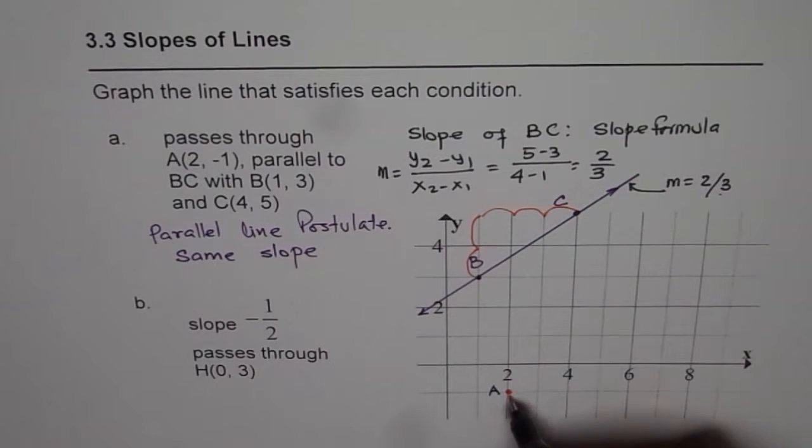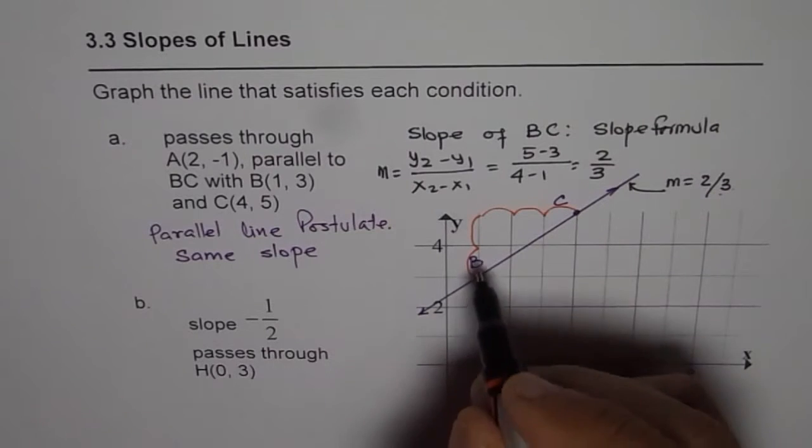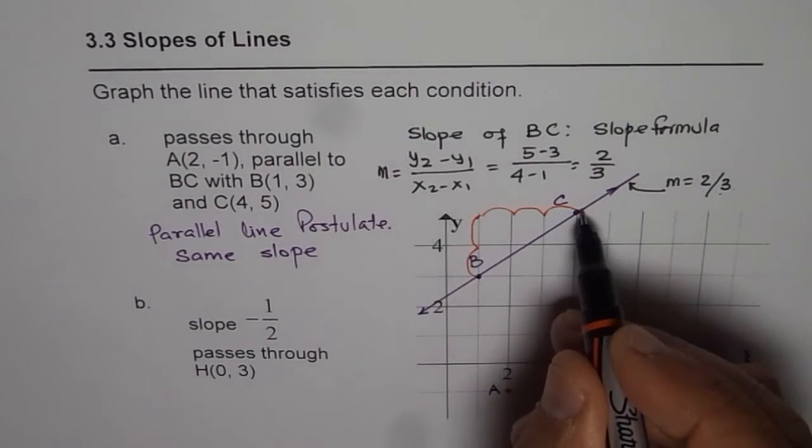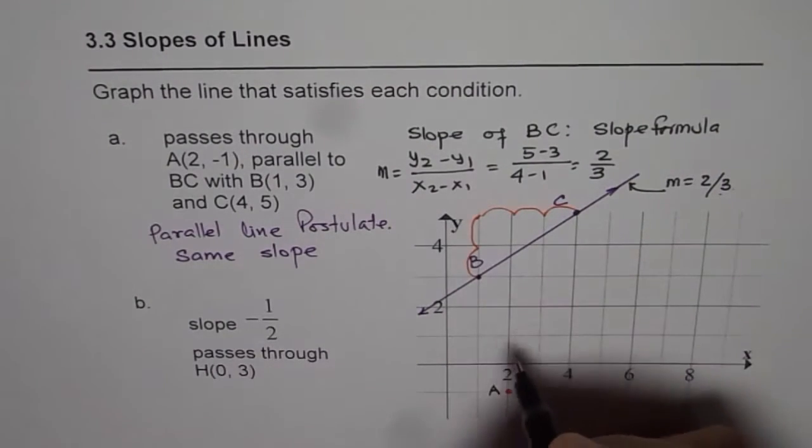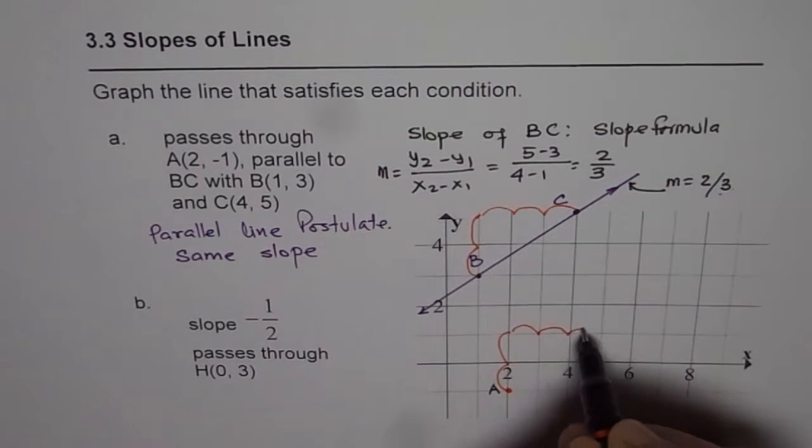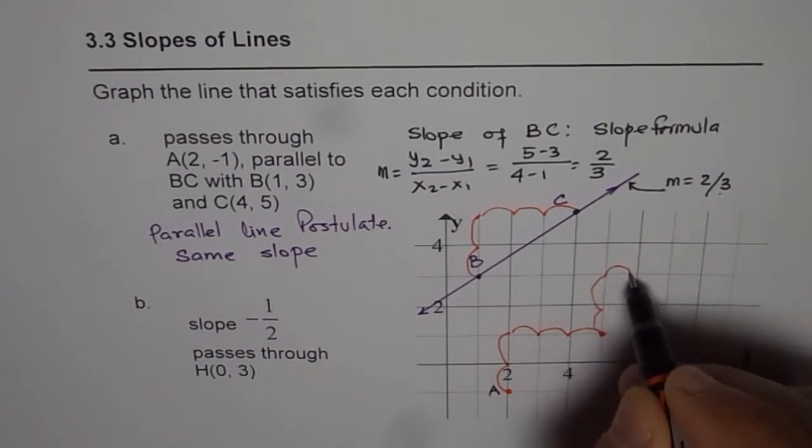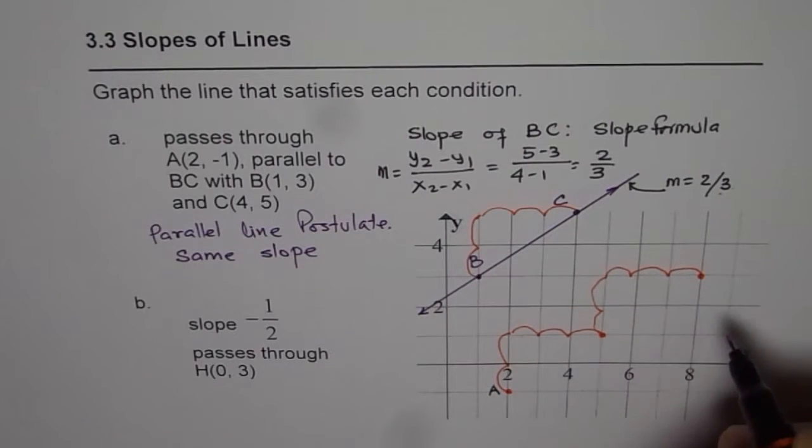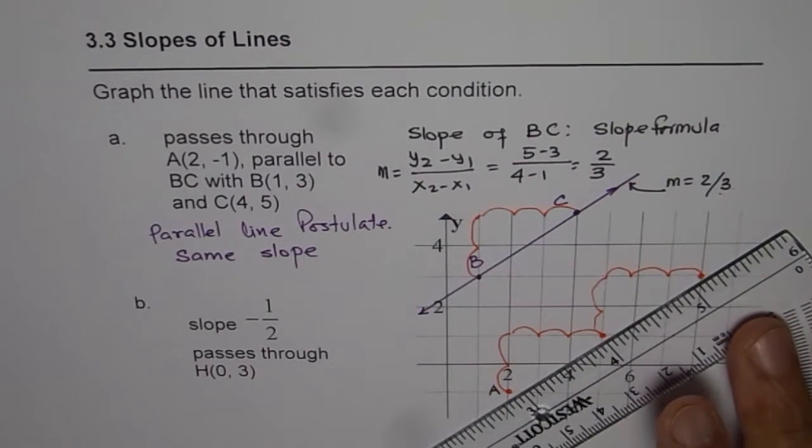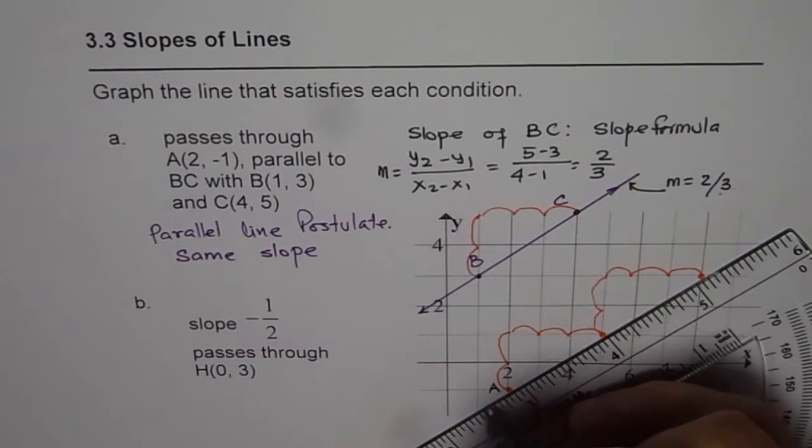From A we need another point so that A and that point give a slope of 2/3. We go 2 up and 3 to the right to get the next point. We can get many points by this process. Connecting these points will give us a line parallel to BC.